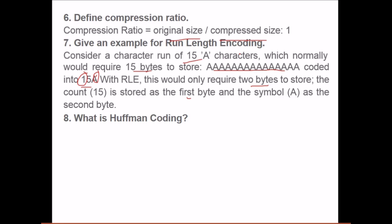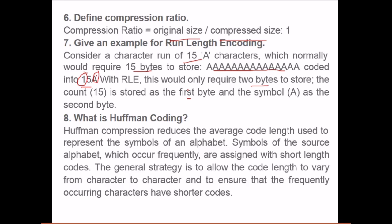Now coming to Huffman coding. What is this Huffman coding all about? Huffman compression reduces the average code length used to represent the symbols of an alphabet. Symbols of the source alphabet which occur frequently are assigned with short length codes. The general strategy is to allow the code length to vary from character to character and to ensure that the frequently occurring characters have shorter code. So which number is coming maximum number of times or more number of times, they are allowed to be given a code, and that code is small. Once it is being retrieved, you just need the codes because you know that what that code represents. This is Huffman coding.